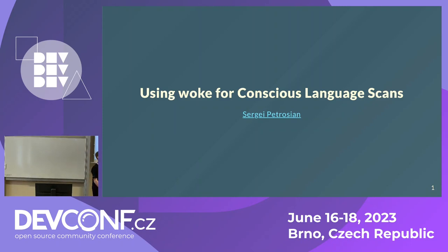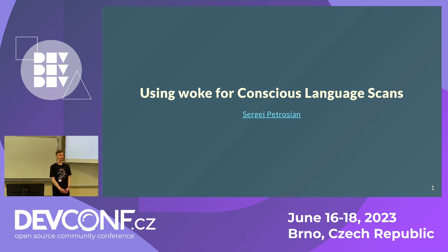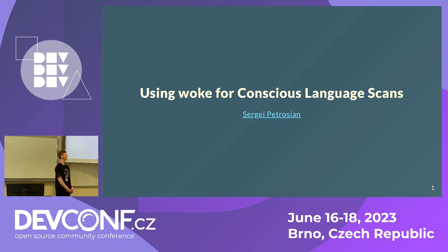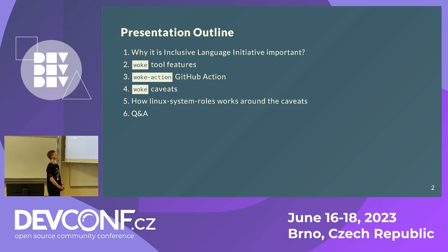Hi everyone, my name is Sergei and I'm working on Linux system roles. In the modern world, diversity, equity, and inclusion have become a main topic and focus. It's important for all of us to feel comfortable on the projects that we work on and participate in. One part of this is conscious language, which is about using words that are inclusive rather than exclusive. In Linux system roles, we started using a tool called woke to detect language that is not inclusive in our code.